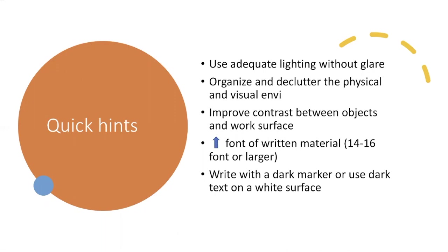You can also increase the font of writing material from 14 to 16 point or larger, and write with a dark marker or use dark text on a white surface. Use different types of sensory input — something that talks or can be felt with the fingers. For example, if the client likes to cook, make sure the microwave has a tactile indicator. If the client can hear better than feel (for example, if they have diabetes affecting their fingers), it's best to use a talking timer or clock so they know when to turn off the oven.